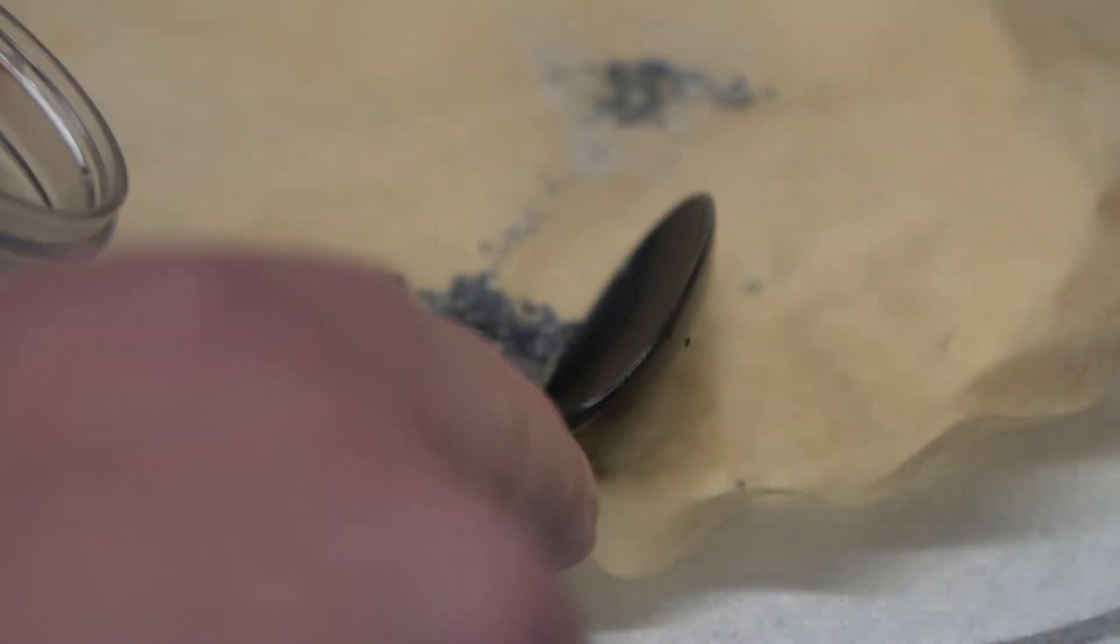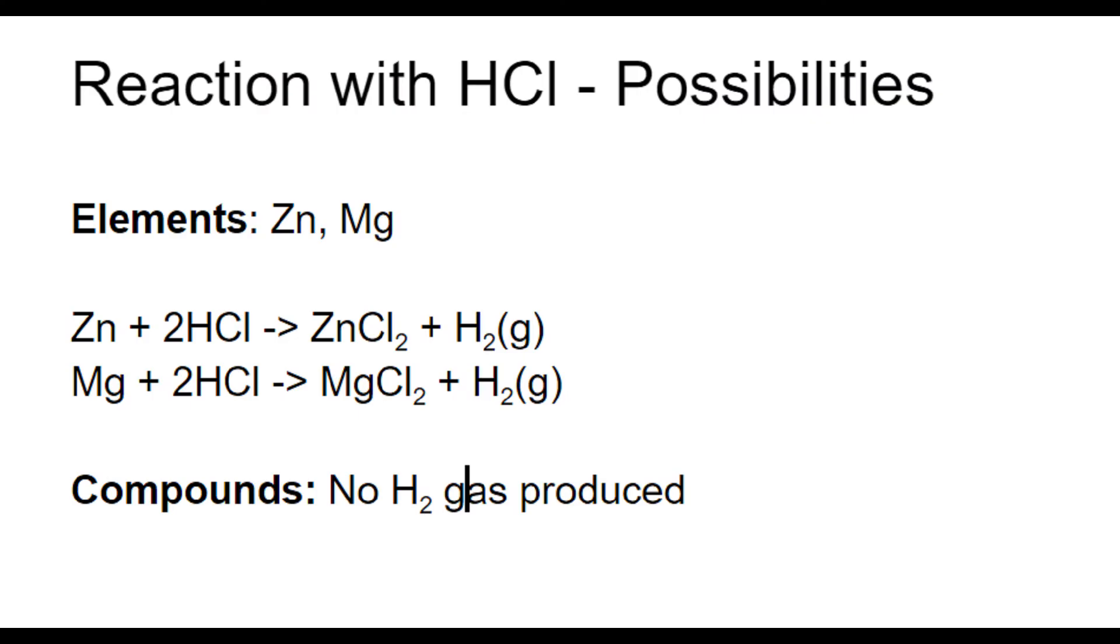We placed the substance on filter paper, washed it, and dried it. The second step was to identify if it was a compound or element. Dissolving an element in hydrochloric acid liberates hydrogen gas, while dissolving a compound would not.